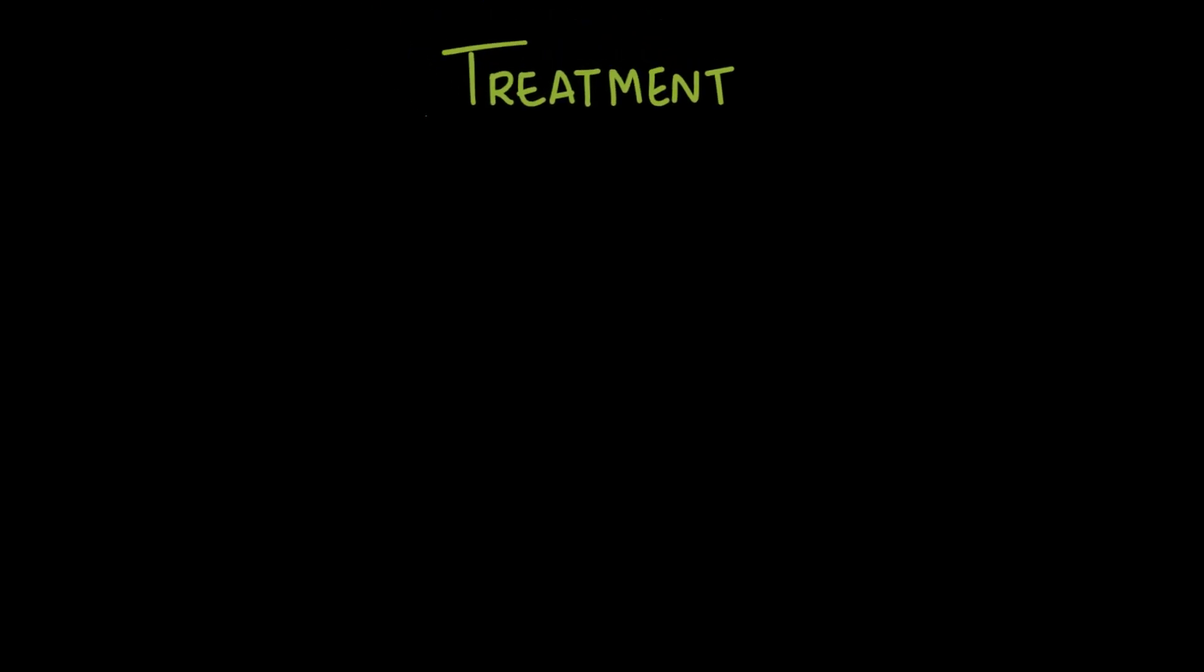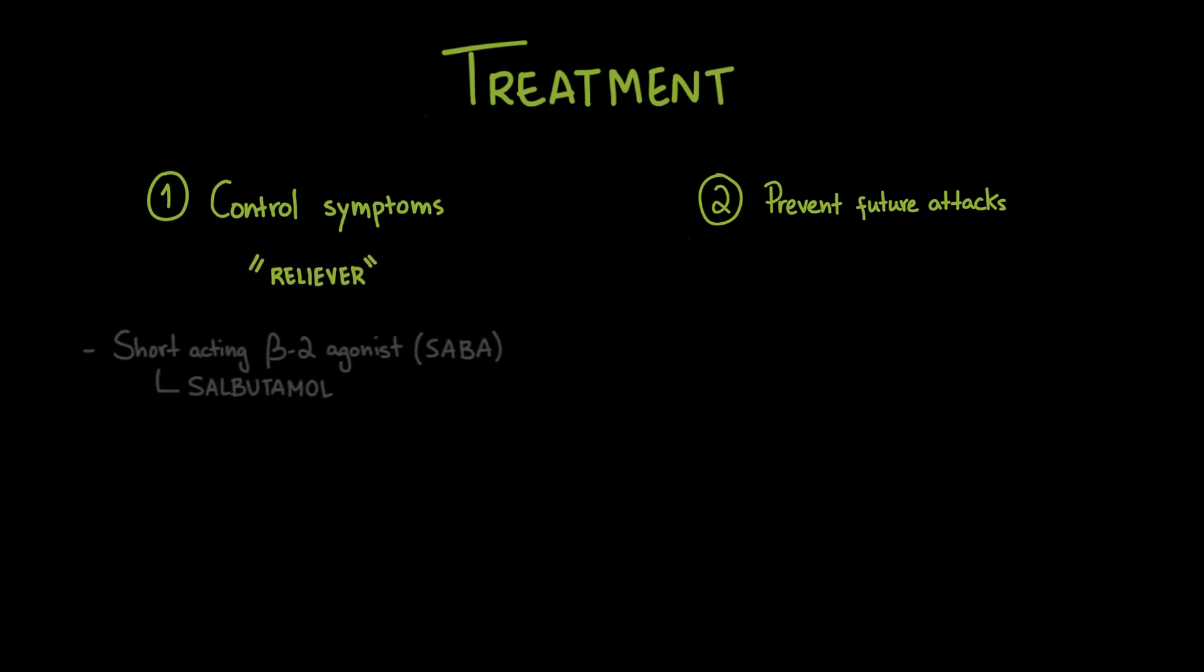The treatment of asthma has two main goals. First is to control symptoms, and second is to prevent future attacks. So, management depends on both relieving acute symptoms and maintaining long-term control of airway inflammation. First, let's look at the medications used in quick relief. These are called reliever medications, and the most common are short-acting beta-2 agonists, such as salbutamol. They work by relaxing the smooth muscles around the airways, rapidly reversing bronchoconstriction, and easing symptoms like shortness of breath and wheezing. However, they only treat the symptom, not the underlying inflammation.